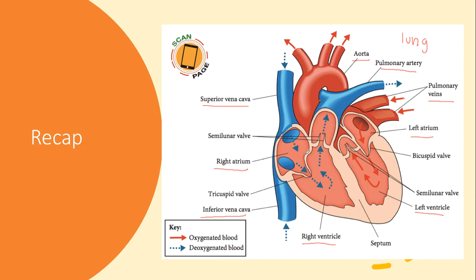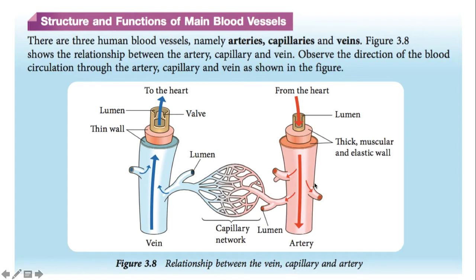You've also learned about the valves. On the right side we have the tricuspid valve, on the left side we have the bicuspid valve. These two valves separate the atrium and ventricle to ensure blood flows in one direction. There is also the semi-lunar valve on both sides, separating the vessels and ventricle, and the septum that separates the left and right sides of the heart.